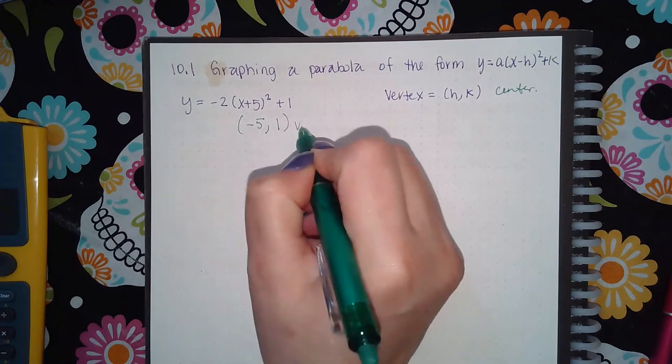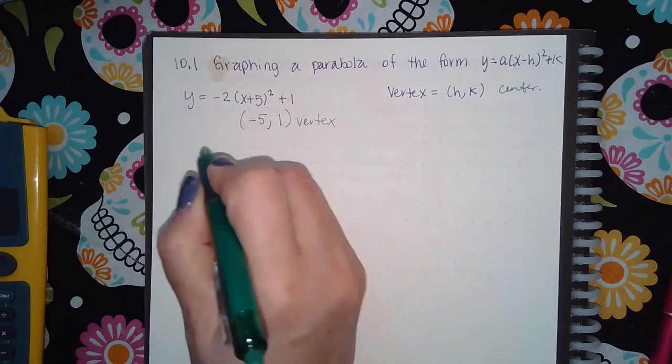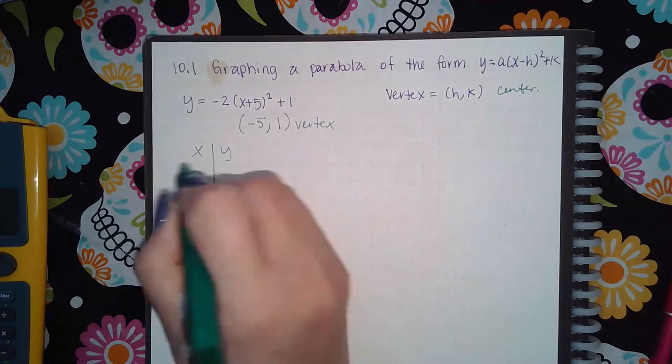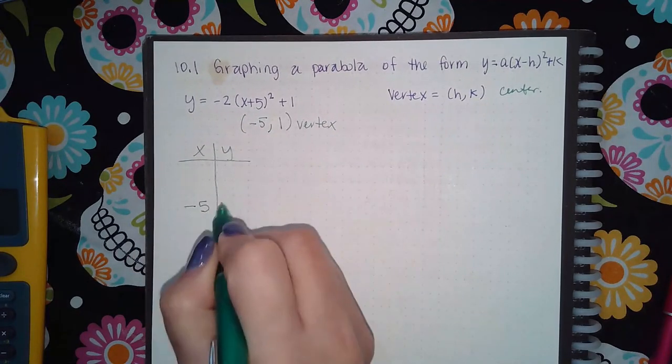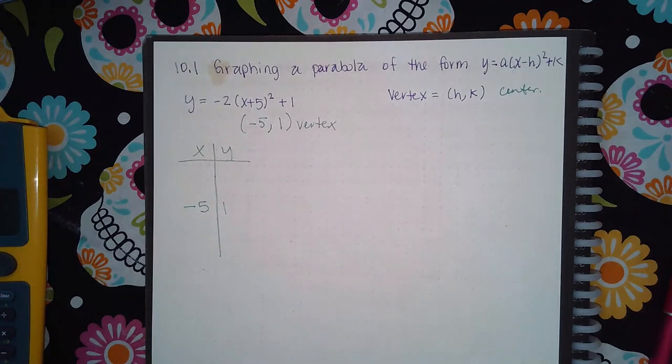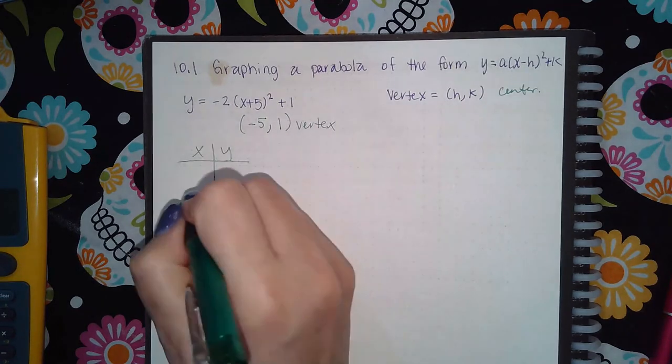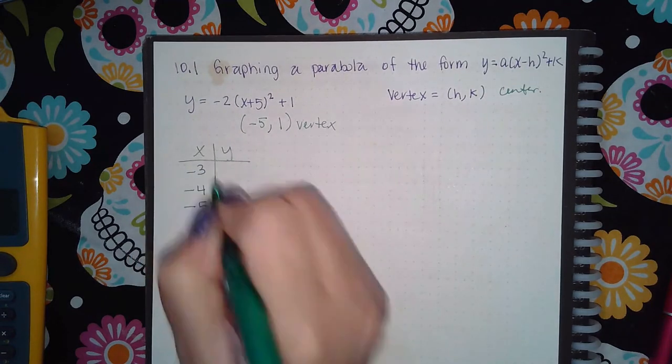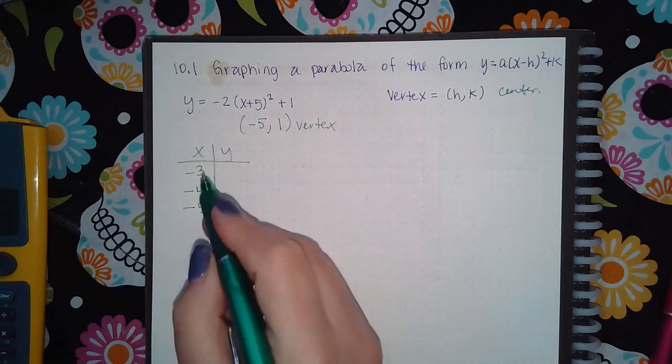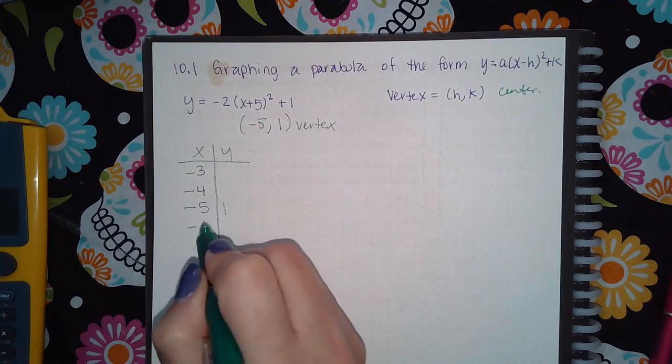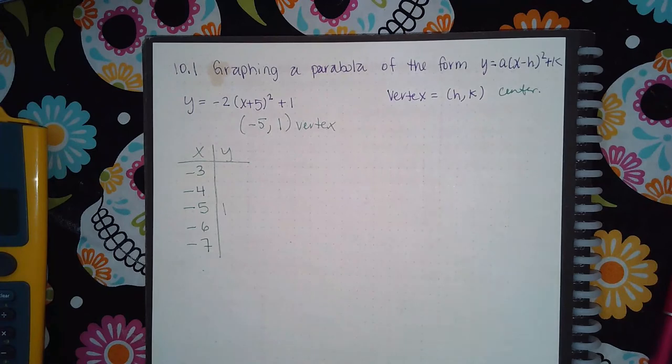So this is my vertex, which means in my table, my center is going to be negative 5. Now I do need two values to the left of negative 5, like negative 6 and negative 7, and then to the right, negative 4 and negative 3, okay?